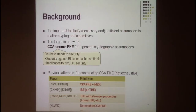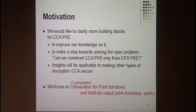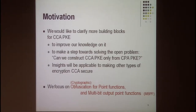This is a non-exhaustive list of previous attempts for constructing CCA-secure encryption from general assumptions. There are many more works. The main motivation of our work is that we would like to clarify more about the sufficient building blocks for CCA encryption — to improve our knowledge on this important primitive and to make a step towards solving the important open problem of whether we can construct a CCA-secure encryption scheme only from CCA-secure ones. These attempts will also give insights applicable to making other types of encryption — like identity-based encryption or functional encryption — CCA-secure.